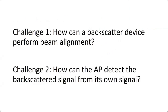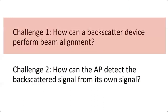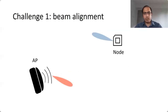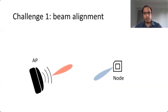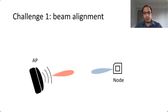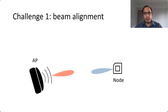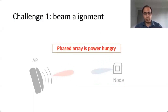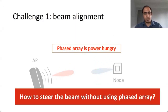The first challenge is how a backscatter device can perform beam alignment with very low power consumption. The second challenge is how the access point can detect the backscatter signal from its own transmitted signal. To address beam alignment, we show an access point and a node that must align their beams toward each other. Since the node is a mobile device, it may need to re-align as it moves. The typical approach uses a phased array, but since phased arrays are power-hungry, they are not suitable for our application.